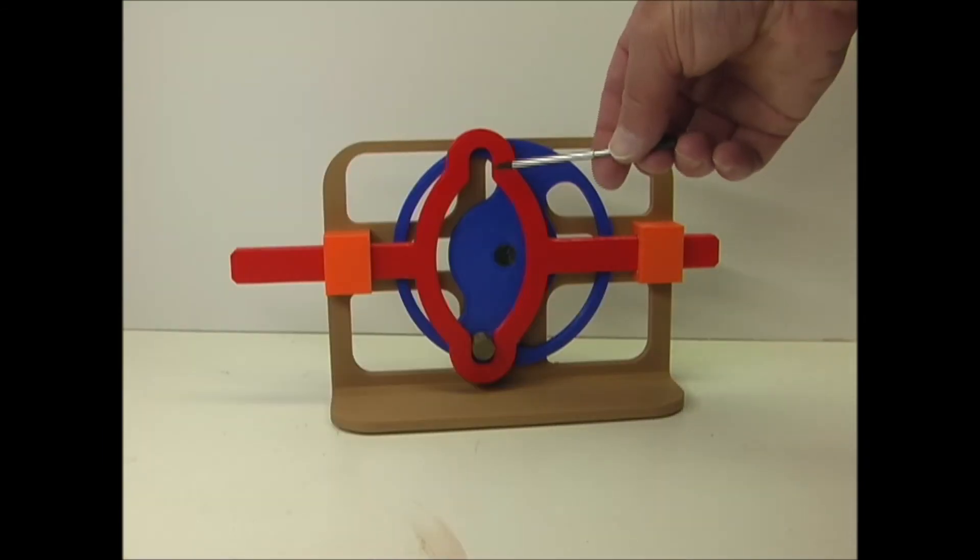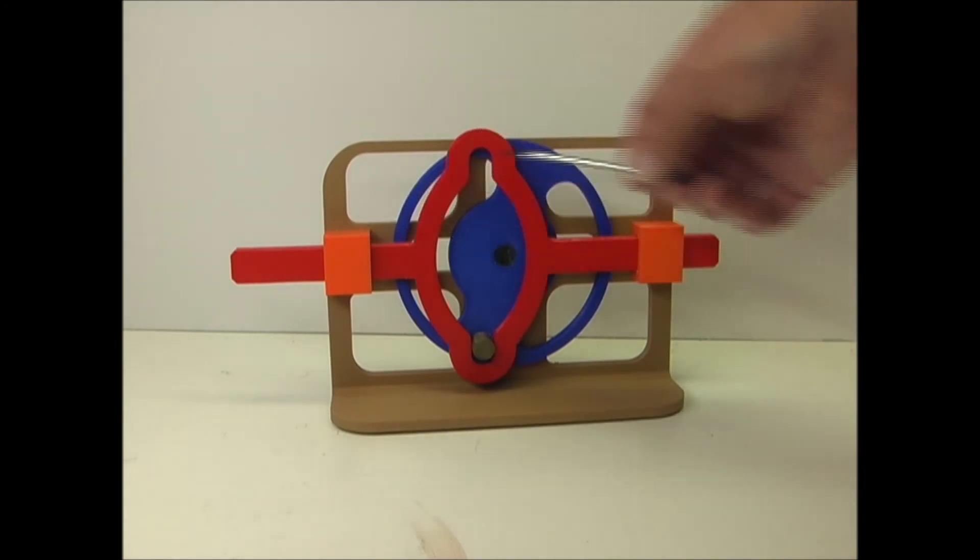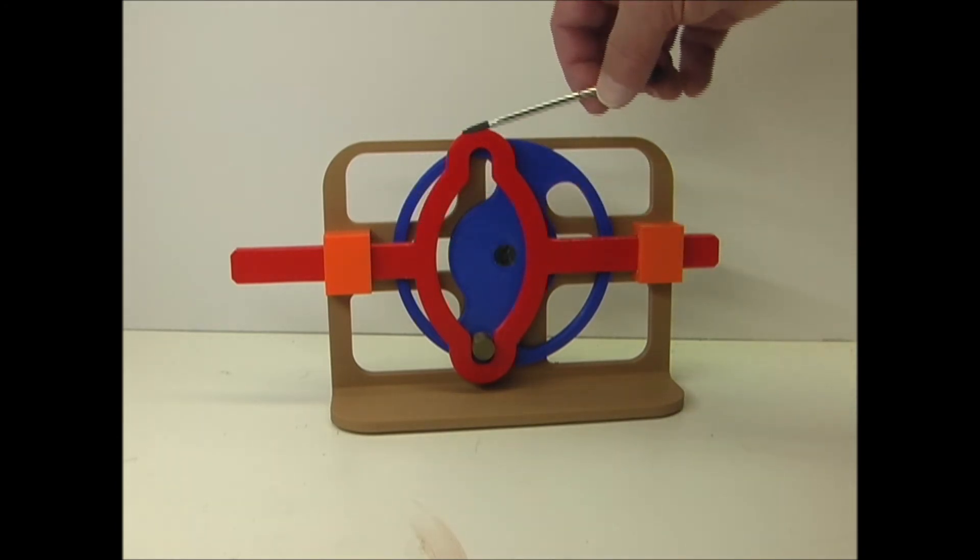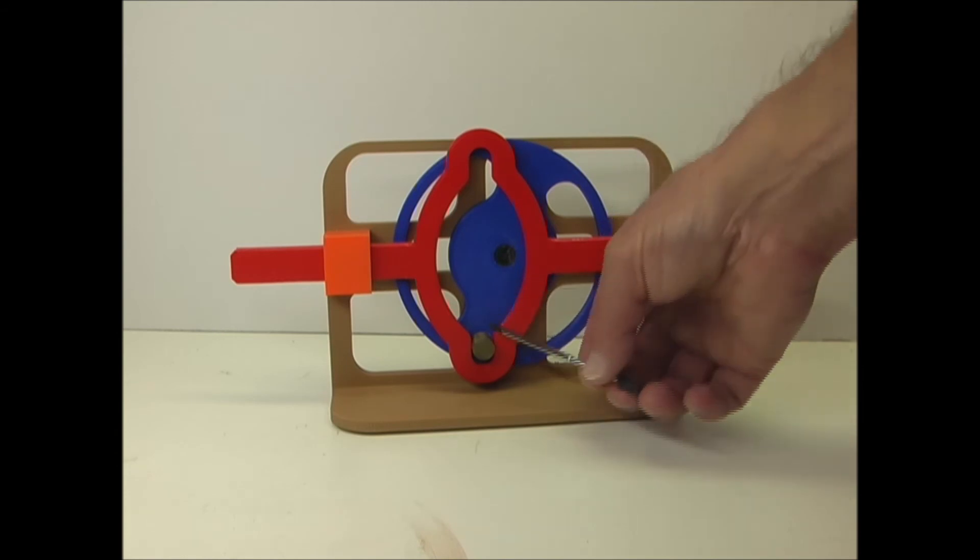This one is called a double dwell, because it dwells or pauses on each end. In part one of this series, I had one that was similar that would stop on one end, but not the other.